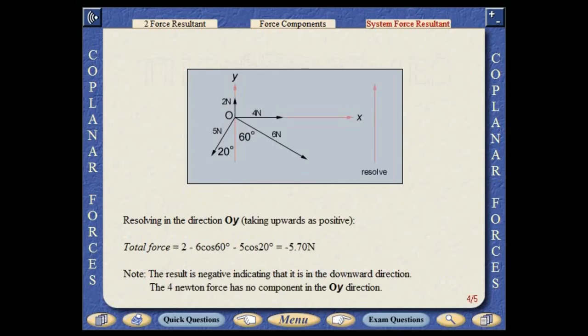Resolving in the direction OY, total force equals two minus six cos 60 degrees minus five cos 20 degrees, which equals minus 5.7 newtons. The result is negative indicating that it is in the downward direction. The four newton force has no component in the OY direction.